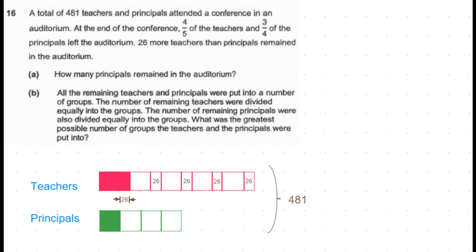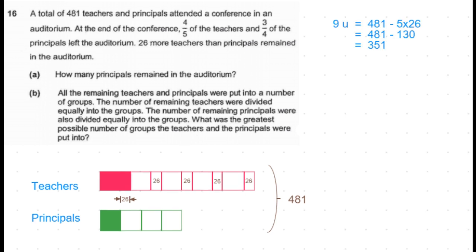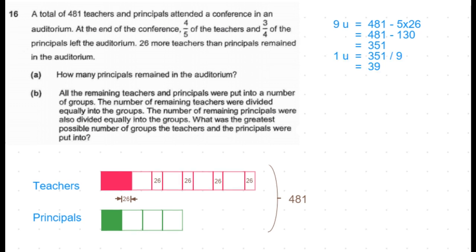The number of teachers in total becomes 5 units plus 5 times 26, while the number of principals is 4 units. That makes the total 9 units plus 5 times 26. Subtracting 5 times 26, which is 130, from 481, we get 9 units equal to 351. So one unit equals 39.